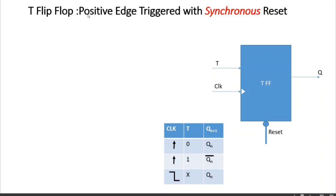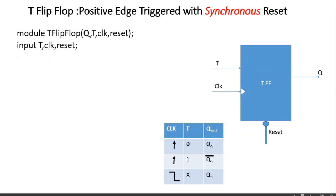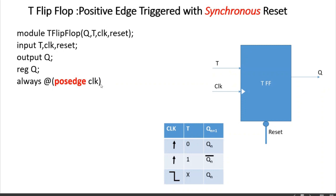We will write the module for the T flip-flop which is positive edge triggered with synchronous active-low reset. We start with the module declaration, declare the input ports, declare the output port Q as a register type. Then within the always block we pass just posedge clock as the sensitivity list, because the reset signal is synchronous. Remember: when the reset is synchronous we do not pass it in the sensitivity list.